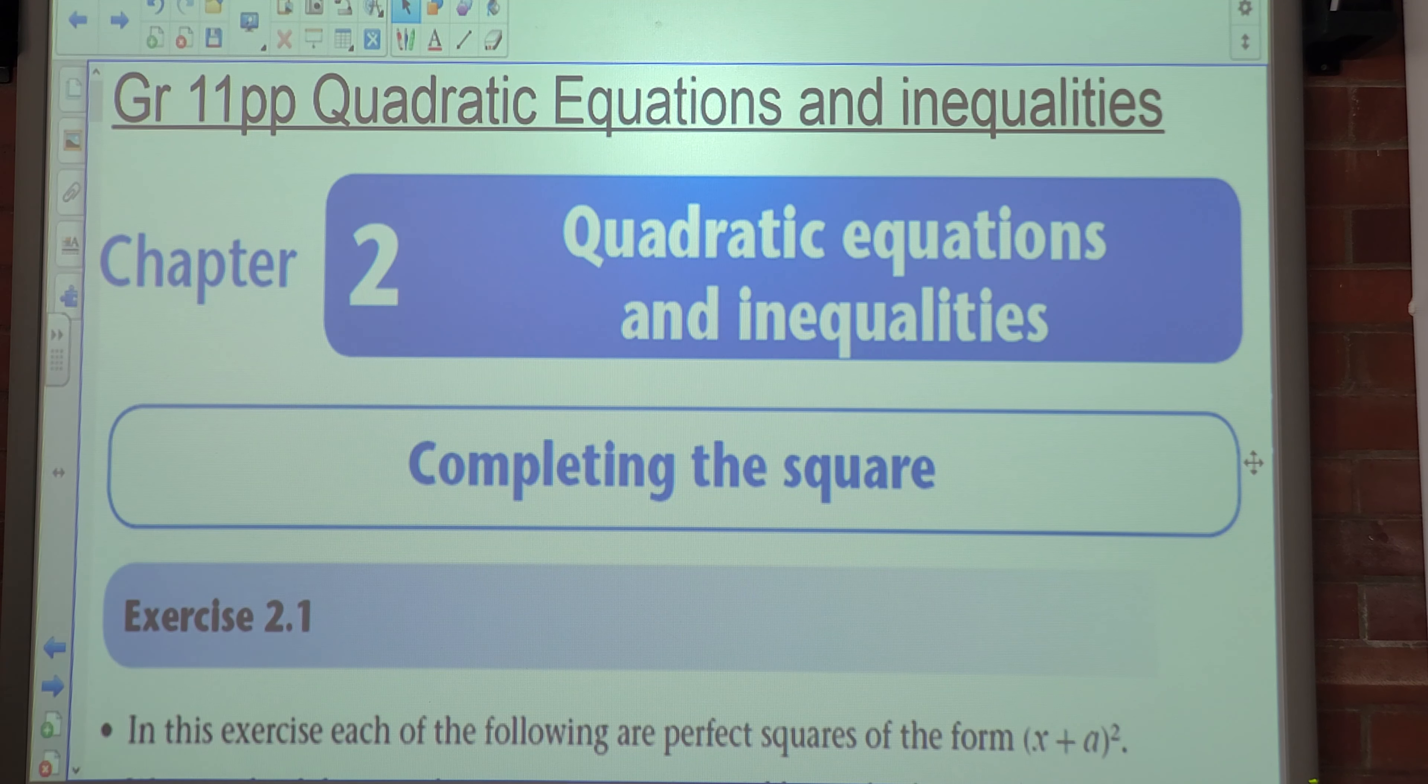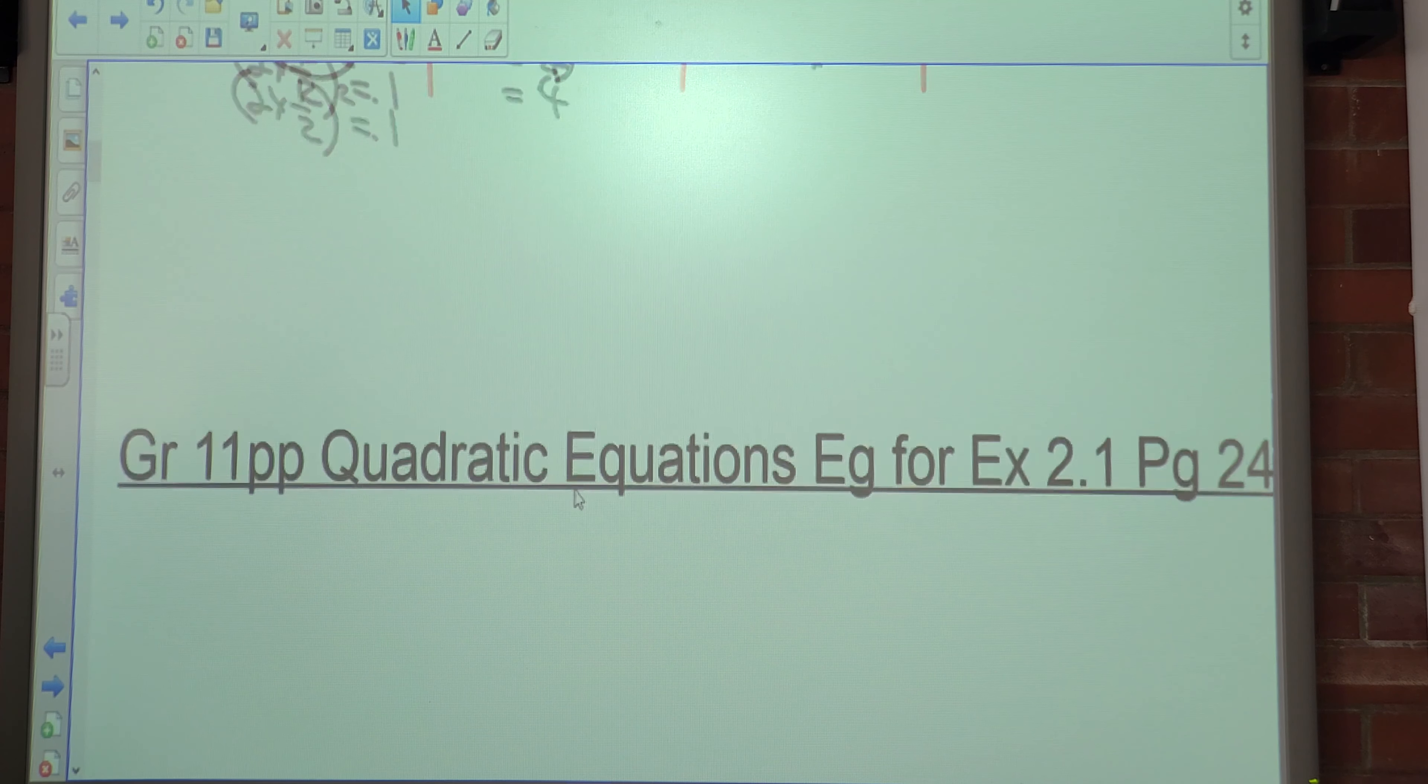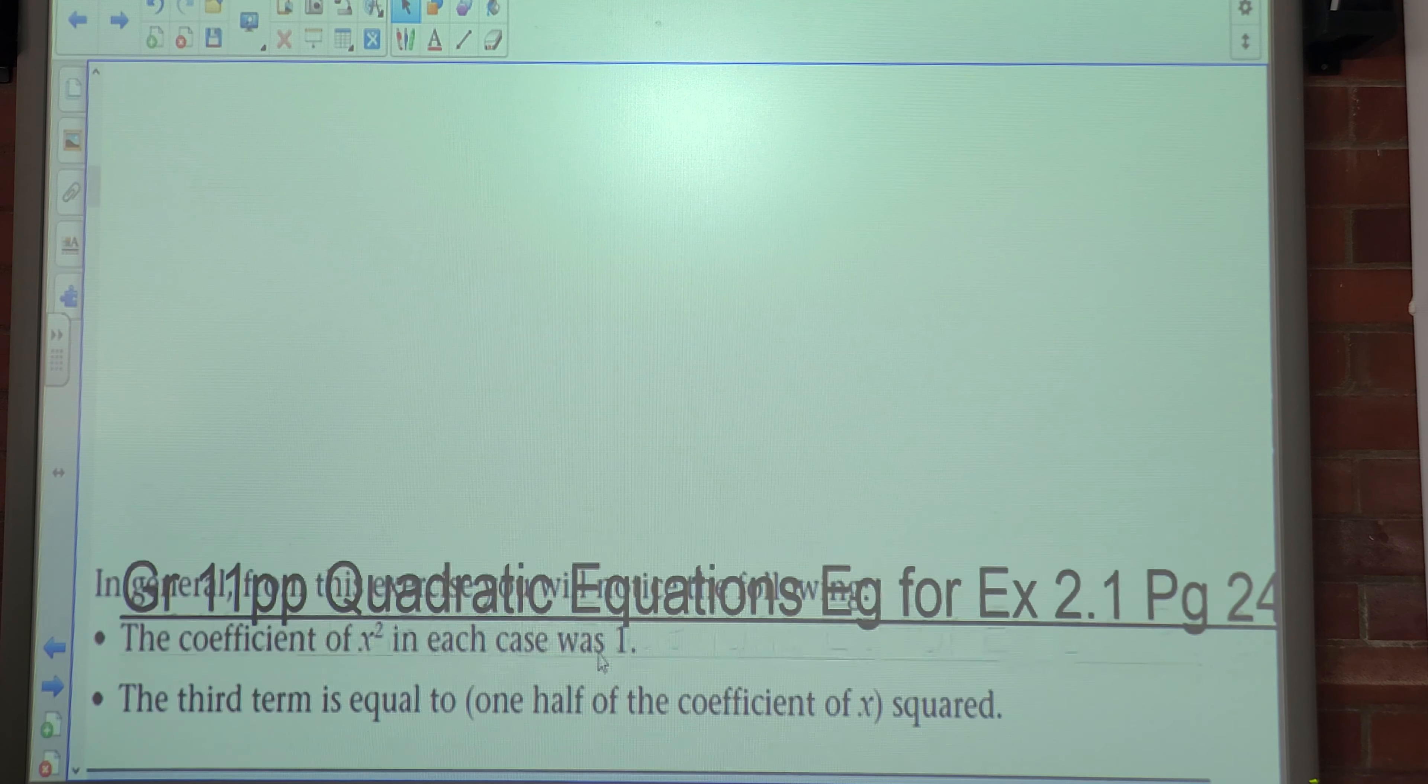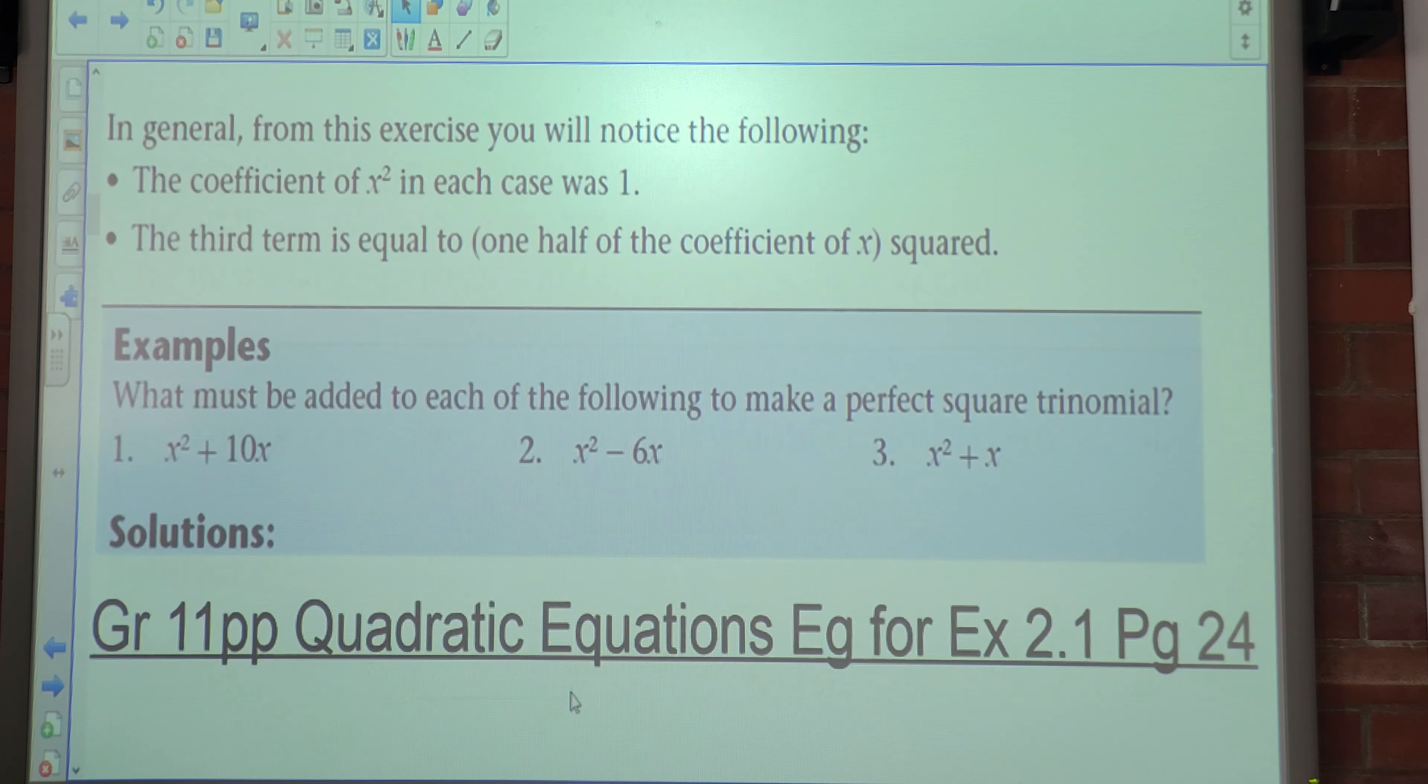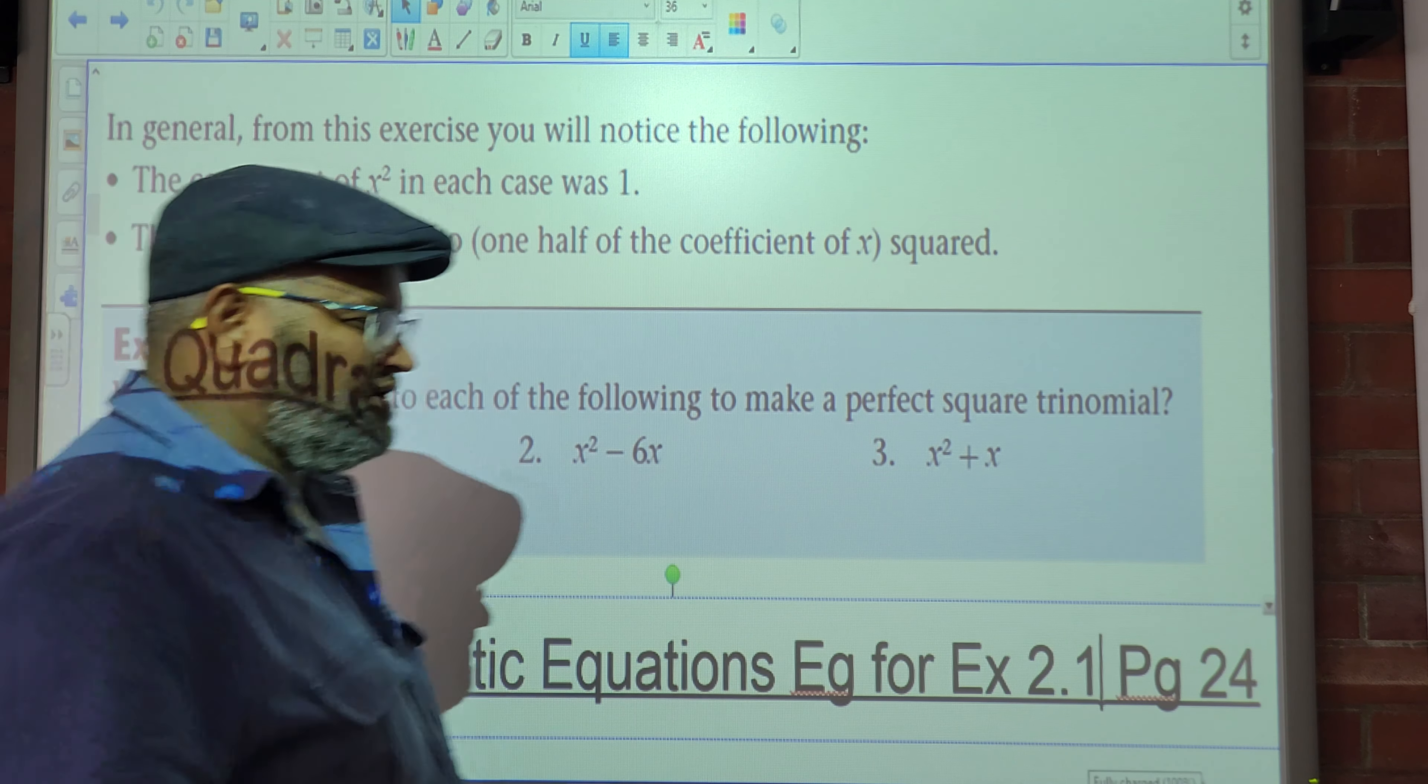Okay, good afternoon class. Today we are looking at exercise 2.1. From the previous exercise, in general, you will notice the following: the coefficient of x² in each case is 1, and the third term is equal to half the coefficient of x squared. We just spoke about that now.